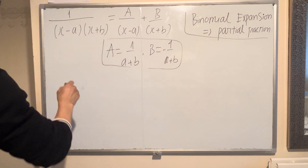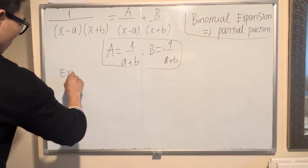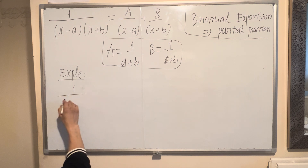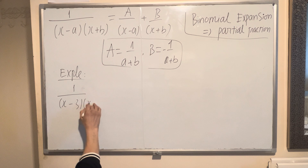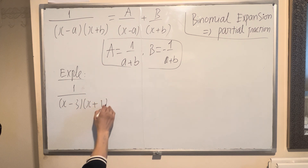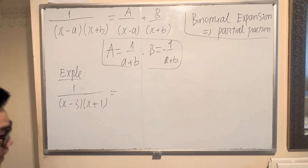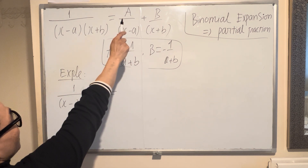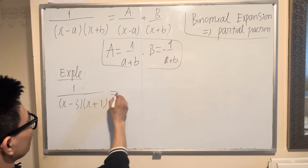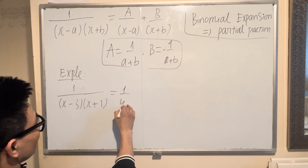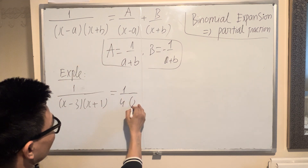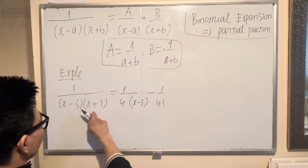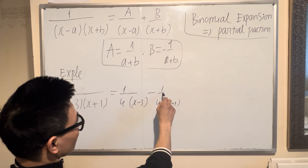I'll give you an example: 1 over x times (x plus 4). I expand this into two fractions added together. The first fraction: A equals 1 over (0 plus 4), so 1 over 4, divided by x. B is opposite to A, so negative 1 over 4, divided by (x plus 4). Easy.